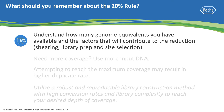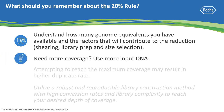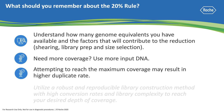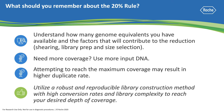So what should you remember about the 20% rule and targeted NGS? Keep in mind the number of genome equivalents you have will be affected by the shearing, library prep, size selection, and multiplexing. If you need more coverage, you can start with more DNA into library prep. As you reach the theoretical maximum coverage, you may see a higher duplicate rate. And you can utilize a robust and reproducible library construction method that gives you high conversion rates and complex libraries.